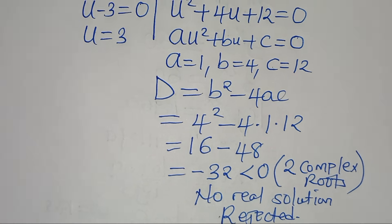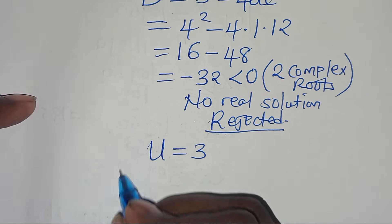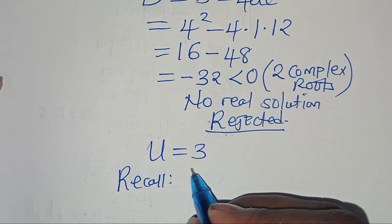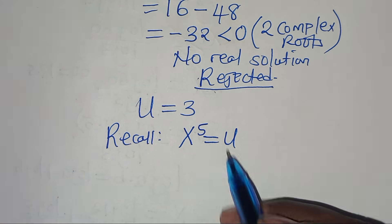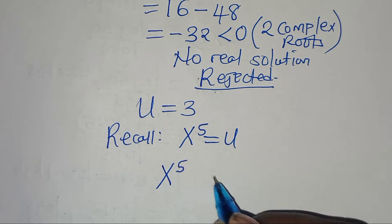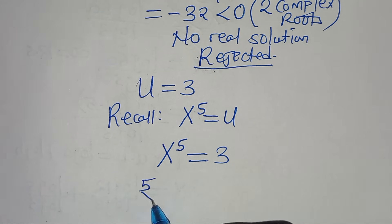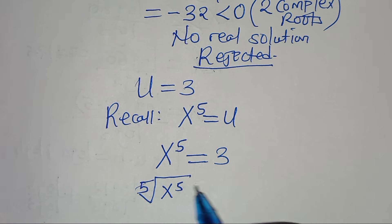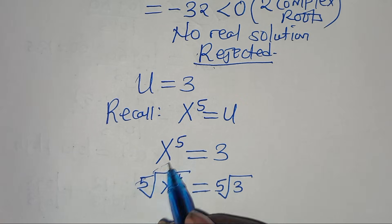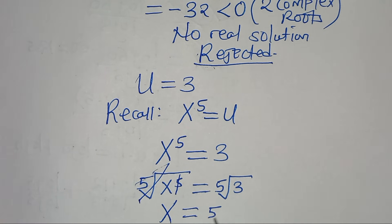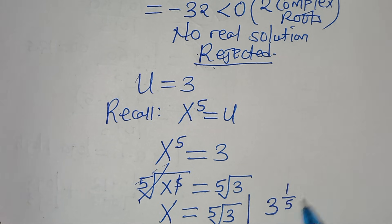Proceeding with u equals 3: since we defined x to the power of 5 as u, substituting gives x^5 equals 3. Taking the fifth root of both sides, x equals the fifth root of 3, which can also be written as 3 to the power of 1 over 5.